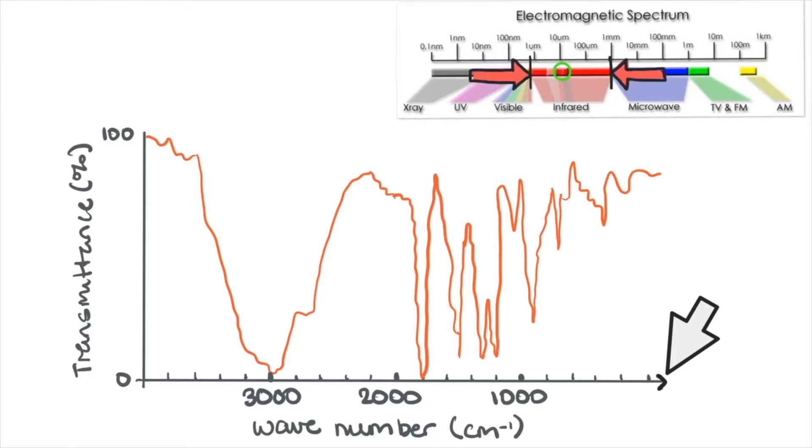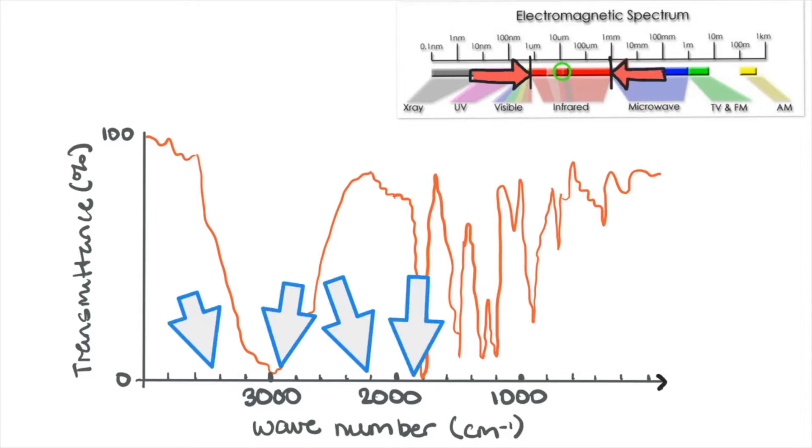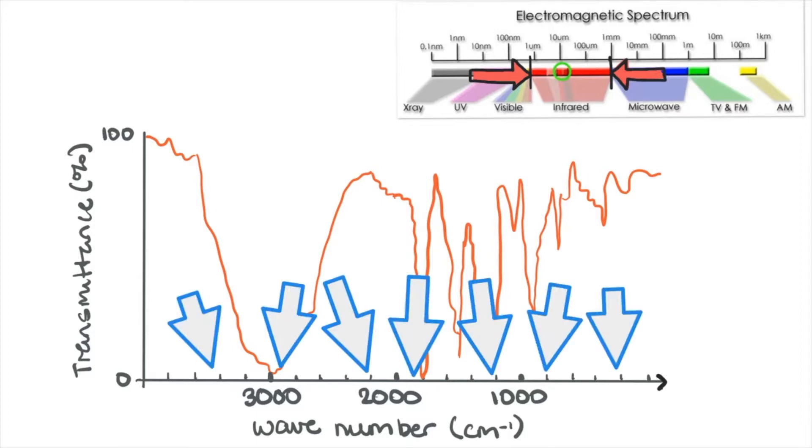When a sample is placed in an IR spectrometer, we irradiate it with all the different wavelengths of infrared light, and some of these get absorbed by the sample, with these numbers corresponding to the different wavelengths. The y-axis is a percentage transmittance that reaches the detector.